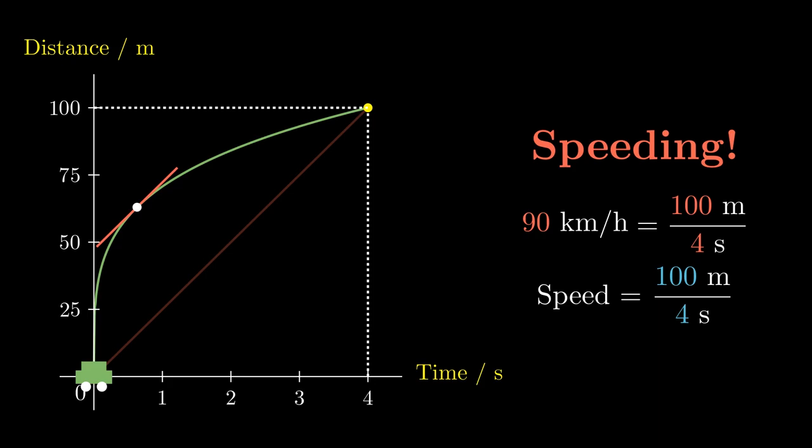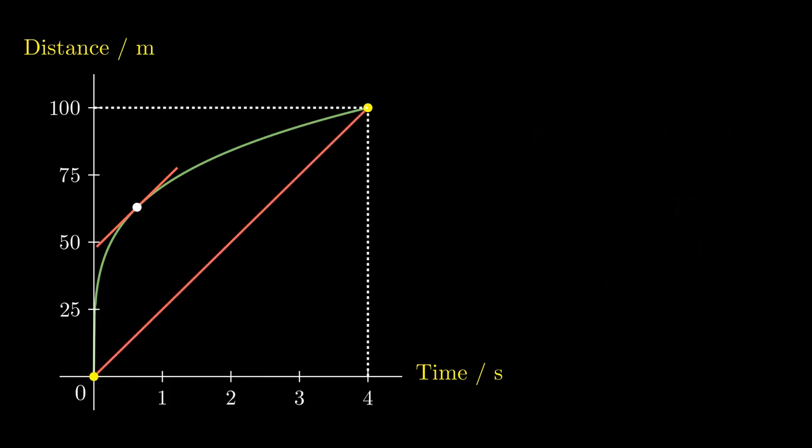And when you are ready, unpause the video to check out how this is always guaranteed. Since the basic trajectory is a straight line with gradient 25, it is going to have the equation d equals 25t.